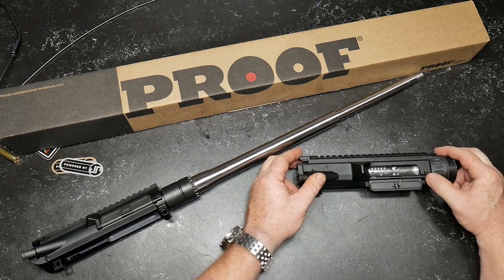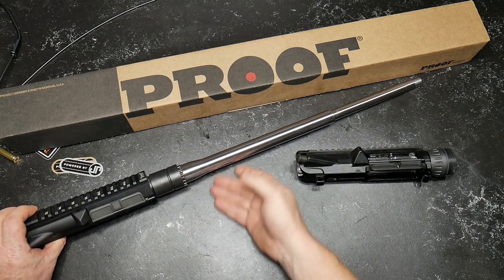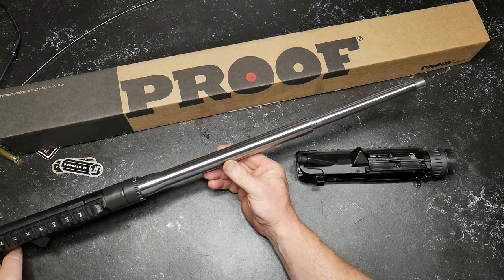This is their stainless steel, one in eight twist, 416R steel. We're going to take a look at this guy, and then we're going to do a cross comparison with this little booger right here. This is Palmetto State Armory's version of the 6.5 Creedmoor.